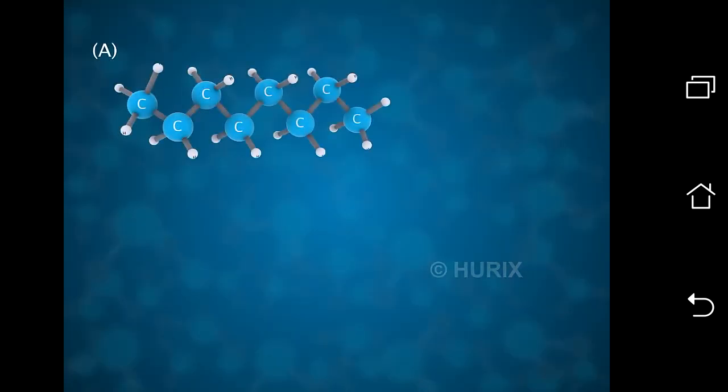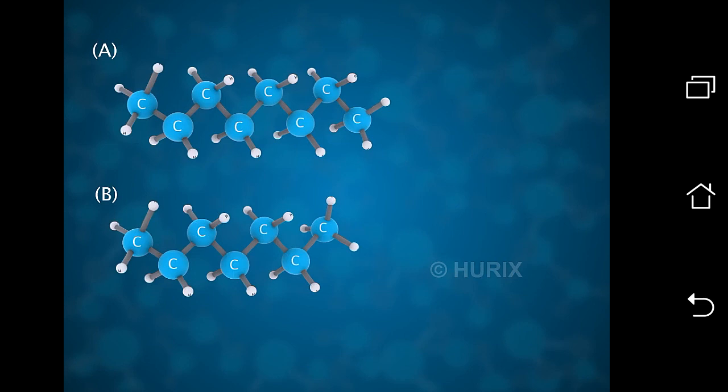Look at the structures of two consecutive members of the homologous series of alkane, A and B, given here. Count the number of carbon and hydrogen atoms in each.